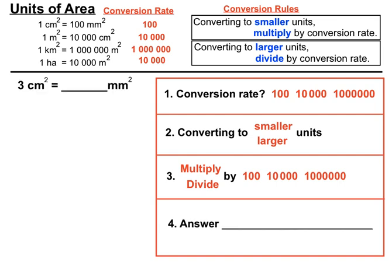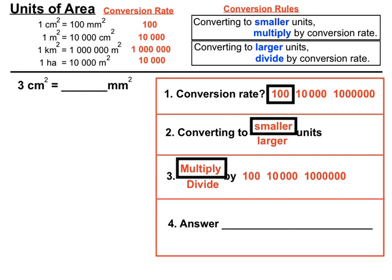Example one: convert 3 cm² to mm². Looking at the conversion rate between square centimetres and square millimetres, that's 100. We're moving from centimetres squared to millimetres squared — that's moving to smaller units — so we multiply by 100. Multiplying by 100 adds two zeros, giving us 300 mm². We're converting to smaller units, and the number got much bigger.